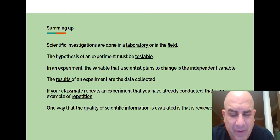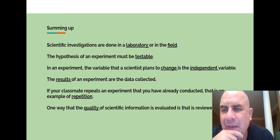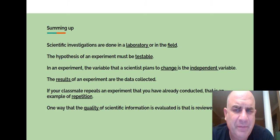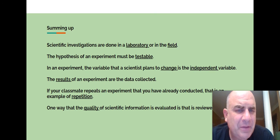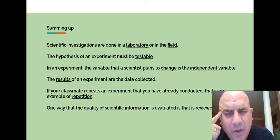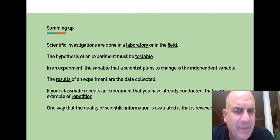So summing up, we have that information. Scientists investigations are done in a laboratory or in the field. The hypothesis of an experiment must be testable. In an experiment, the variable that scientists plan to change is the independent variable. The results of an experiment are the data collected. If your classmate repeats an experiment that you have already conducted, that is an example of repetition. One way that the quality of scientific information is evaluated is that it's reviewed by peers.